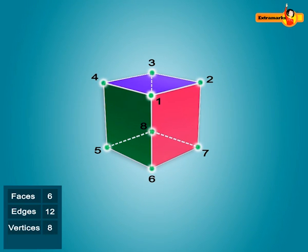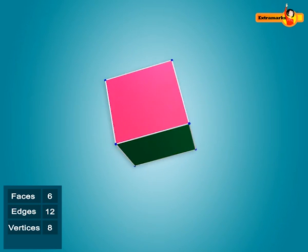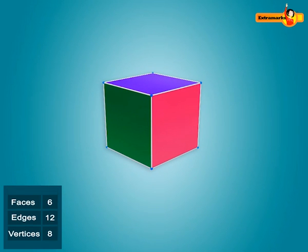In the given figures, the solid shape is made up of 6 faces, 12 edges, and 8 vertices. It is known as a cube.